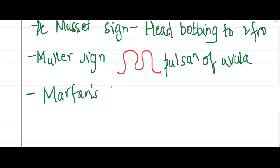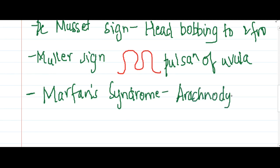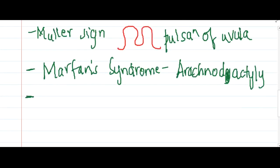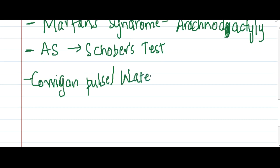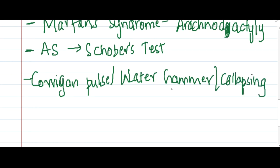In Marfan's syndrome, arachnodactyly — the presence of long fingers — is seen. In ankylosing spondylitis, Schober's test can be done and is seen positive. Other signs include Corrigan's pulse, also called water hammer pulse or collapsing pulse, which is seen in aortic regurgitation.